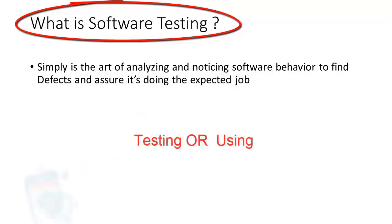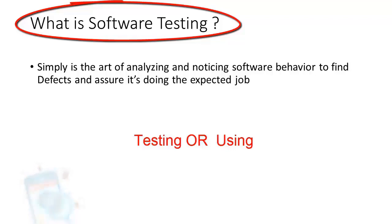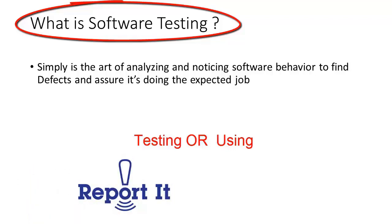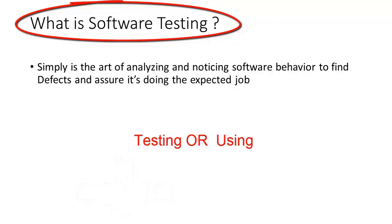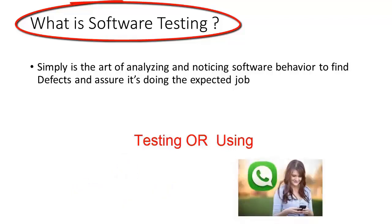Let's differentiate between testing the software and using the software. In the testing phase, you are expected to test the application to find issues, then report those issues to get them fixed. This happens usually when the application has not been released to its end user yet. Using an application is just for the purpose of a real-life scenario — you are using Facebook, but you are not testing Facebook, because the testing phase has already been done and Facebook is released and online.